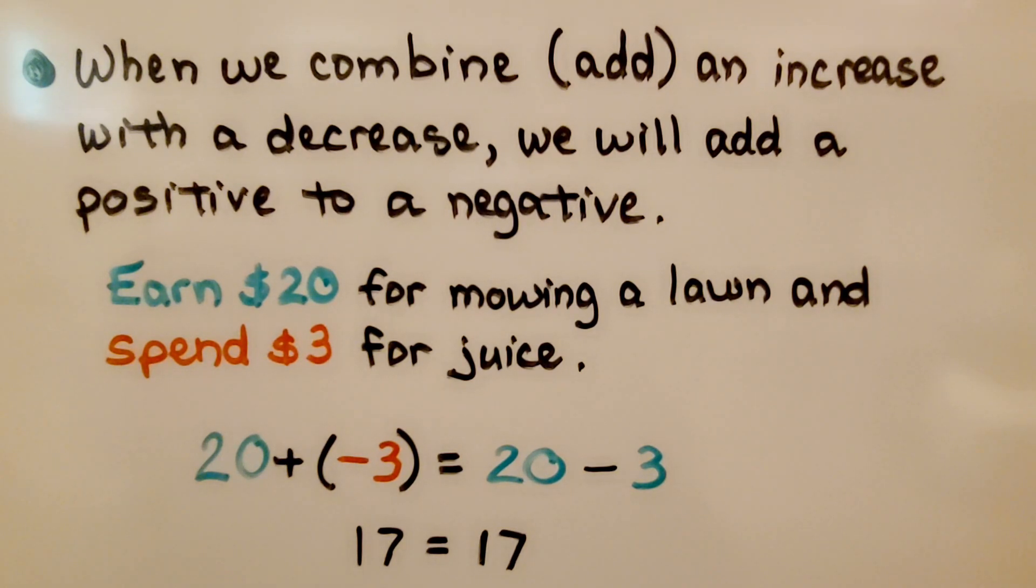If we earn $20 for mowing a lawn and spend $3 for juice, we have a positive 20 plus a negative 3. It is equal to 20 minus 3. 20 plus a negative 3 is equal to 17, and 20 minus 3 is equal to 17.